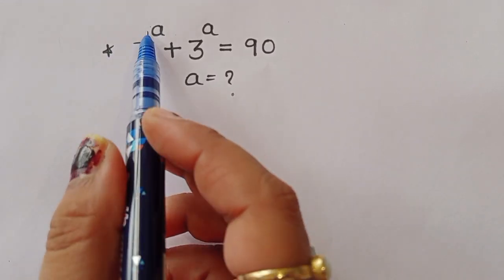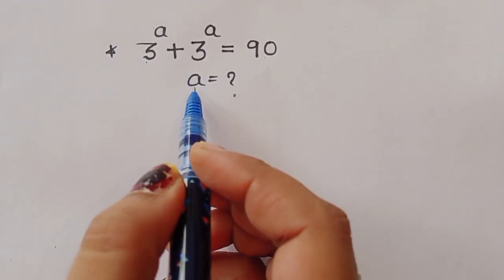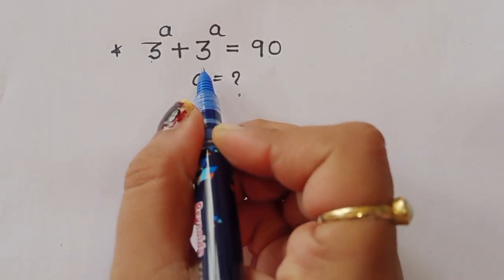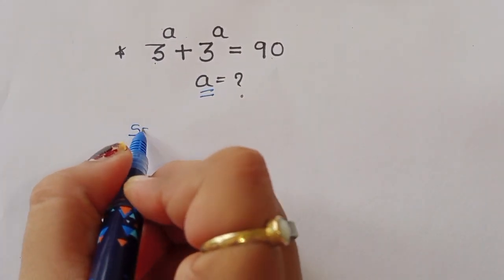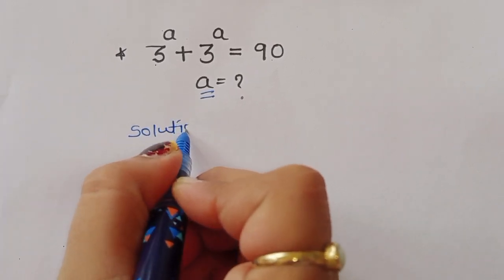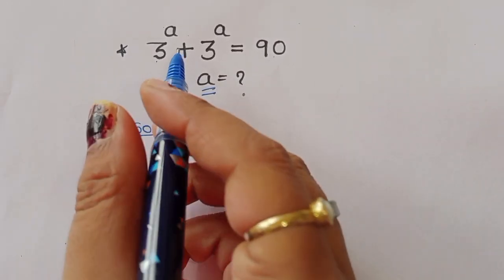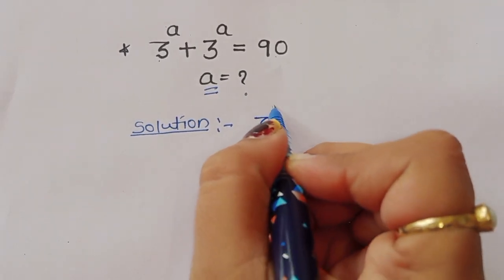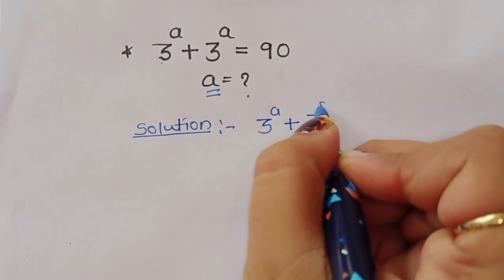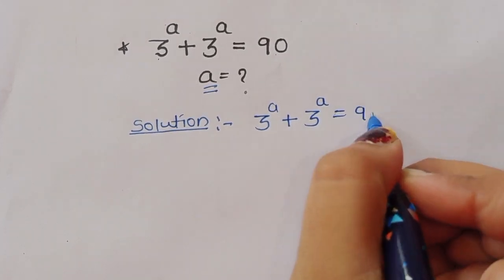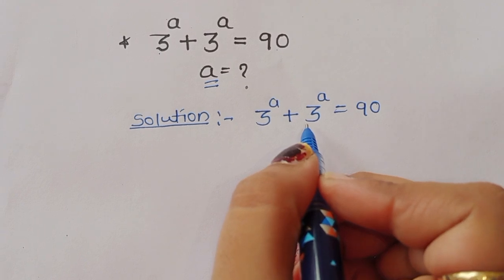The question is: given 3 power a plus 3 power a is equal to 90, we have to find out the value of a. Let's see the solution. 3 power a plus 3 power a is equal to 90 — this is given.